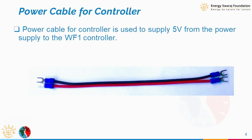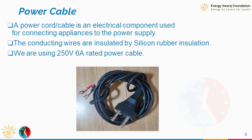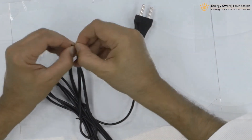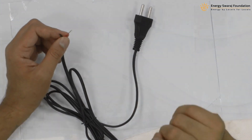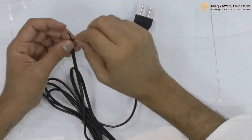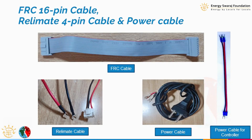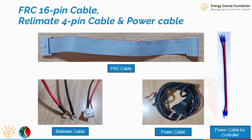We also need to supply power to the controller, so there is a similar power cable for the controller as well. There is also a third cable — the AC power cable — which plugs into a normal 230-volt socket and connects to the power supply input. The red wire goes to the line and the black wire goes to the neutral. So these are the cables required for supplying power to mainly two things: your controller and your LED display.